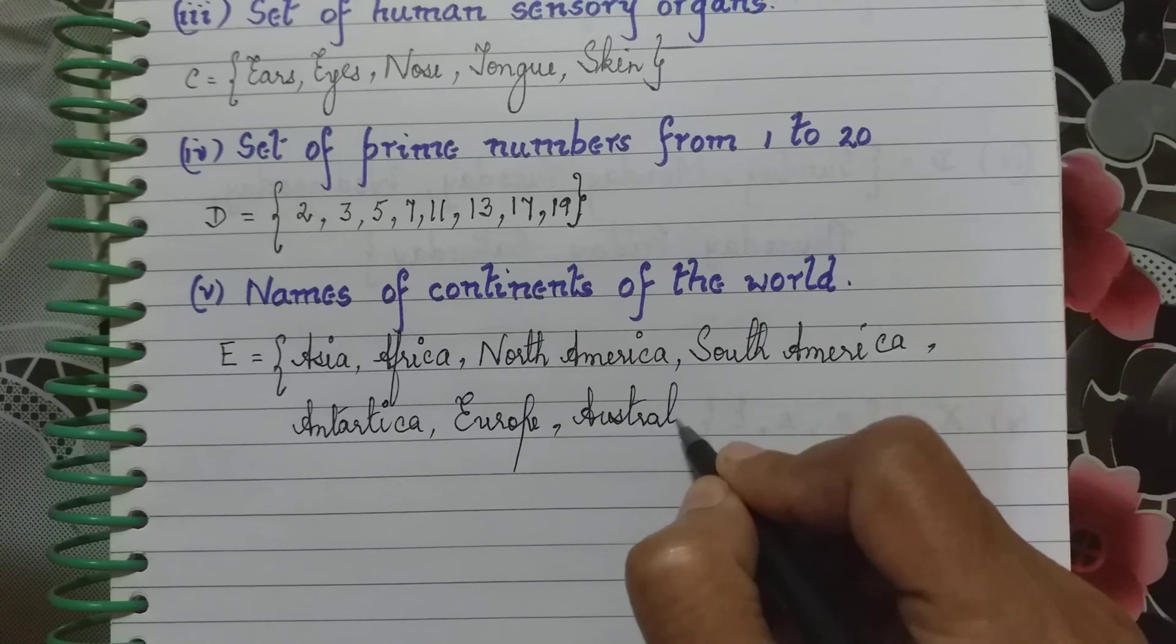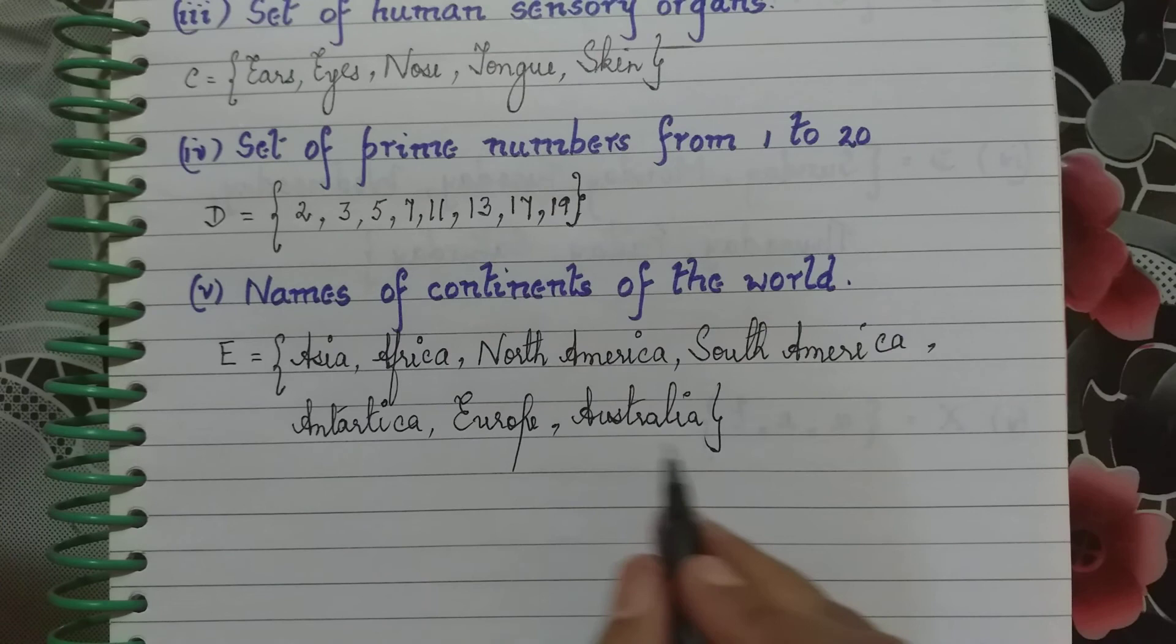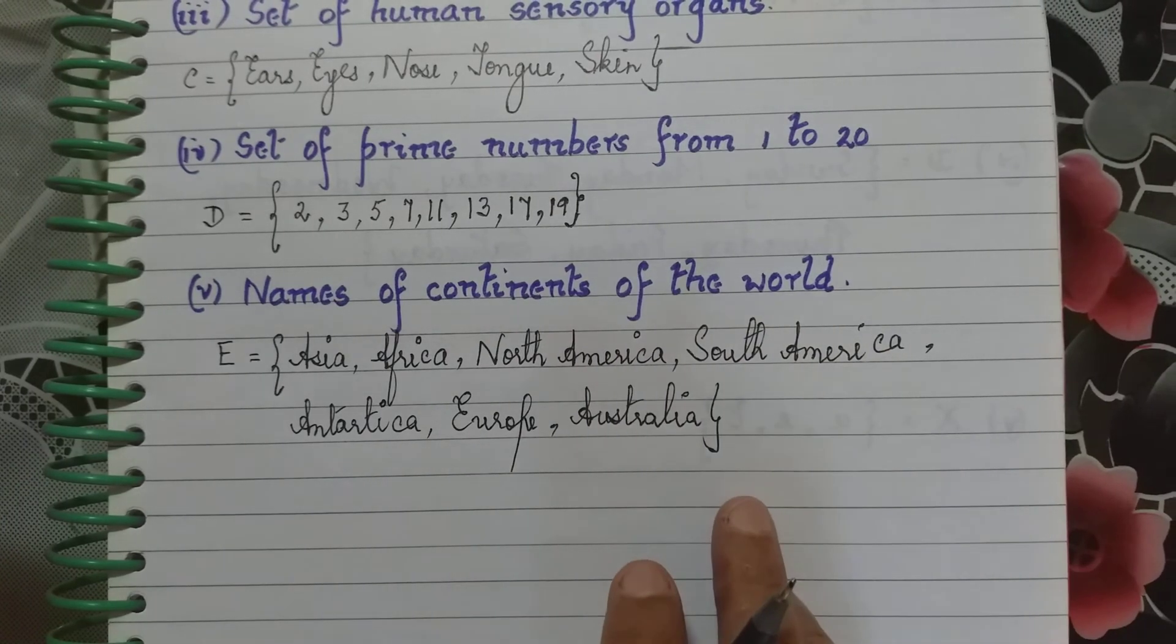Let's count and see whether we have missed any of the continents: 1, 2, 3, 4, 5, 6 and 7. We have named all the continents.